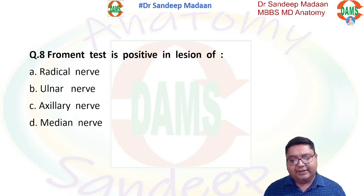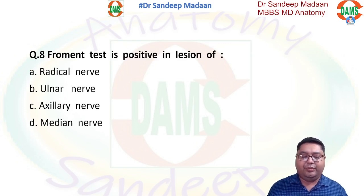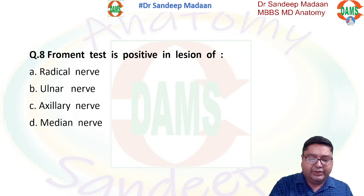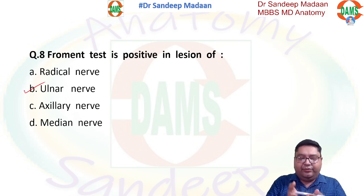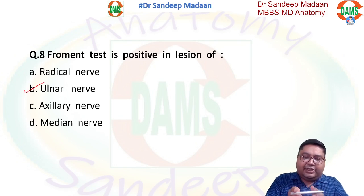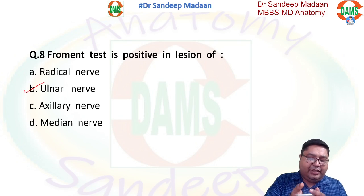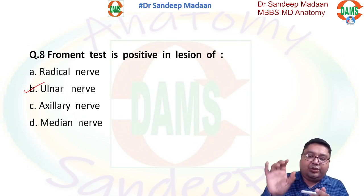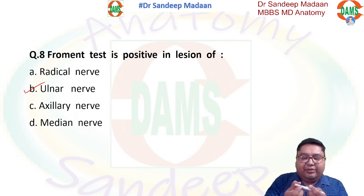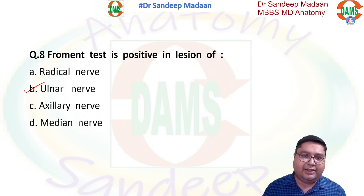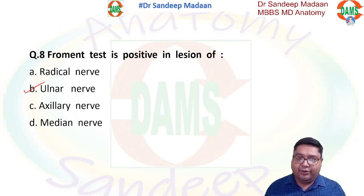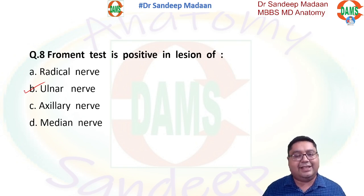Froment's sign is positive in ulnar nerve lesion. We ask the patient to hold a book using the adductors, and we explain how to use the adductor pollicis. If the adductor pollicis is not working, the patient will hold the book using the flexor pollicis longus instead — this produces Froment's sign. So Froment's test is positive in ulnar nerve lesion when the adductor pollicis is not working and the patient uses the flexor instead.